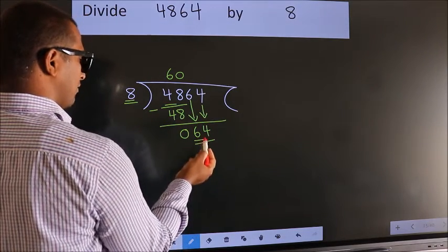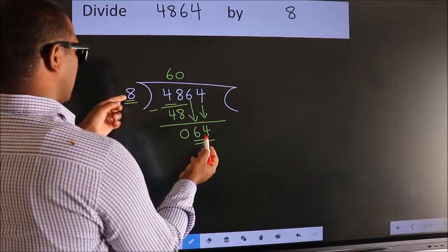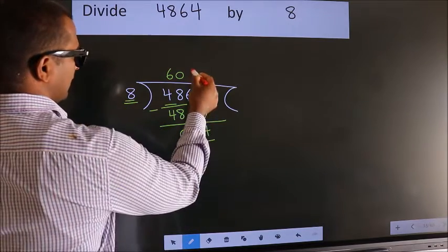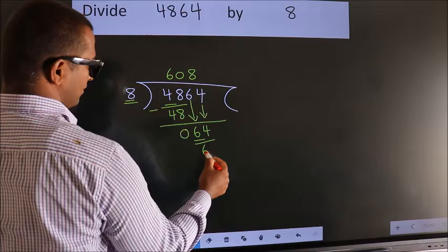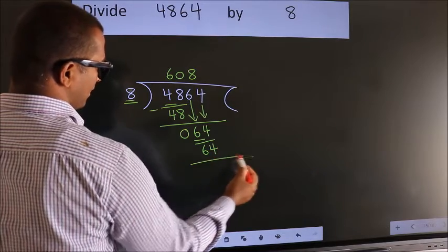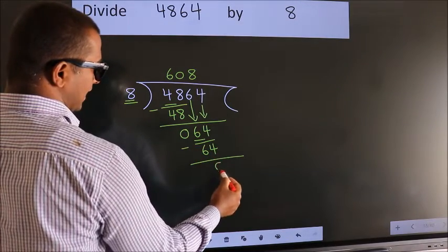So 64. When do we get 64? In 8 table. 8 eights, 64. Now we subtract. We get 0.